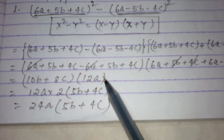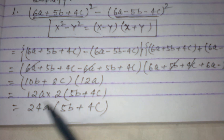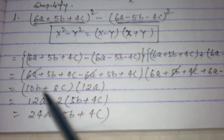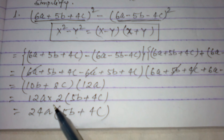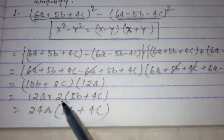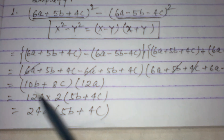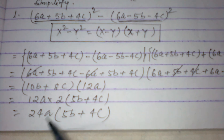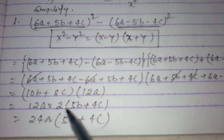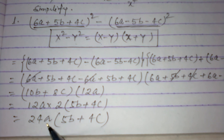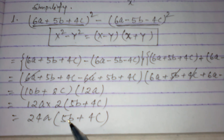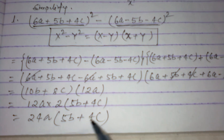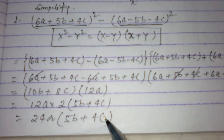So we write 12a multiplied by (10b + 8c). From these two terms we take 2 as a common factor, giving 2(5b + 4c). Therefore, the final answer is 12a × 2(5b + 4c) = 24a(5b + 4c).